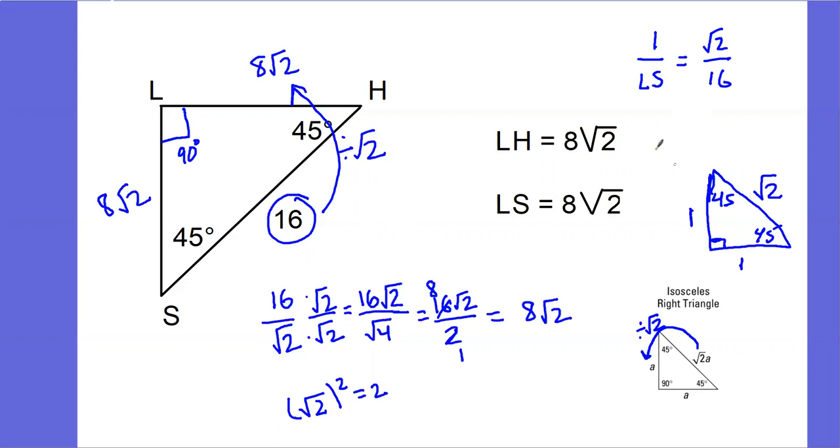Solving this proportion, we'll get your answer. So root 2 times LS would be root 2 times LS. 1 times 16 is 16. And divide both sides by the square root of 2.